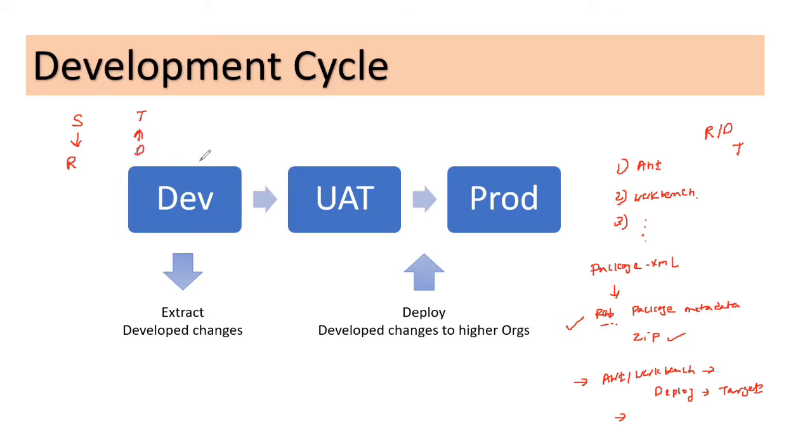Let's see this scenario with the help of an example. Let's say if I have created an object in my dev org, I've created an object along with two fields in my dev org. Now, if I have to move these changes to the UAT for testing, post testing, if I have to move it to the production, I have to use the process of deployment here.